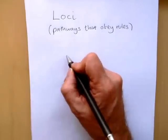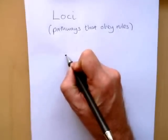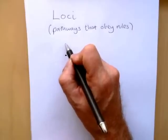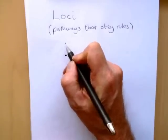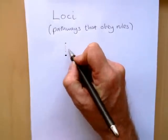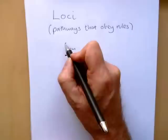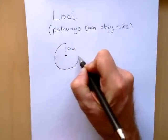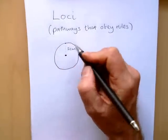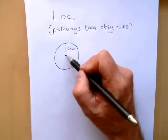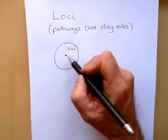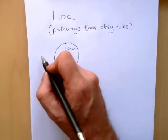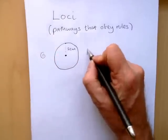The first one is being a fixed distance from a point. Now if you're a fixed distance from a point, let's say you are 2cm away from a point, then the pathway you'll take will be circular. The definition of a circle is that you're always a fixed distance away from the center. Now I've just drawn it freehand for now. I'll be showing you later how to do it with a pair of compasses. So that's your first rule, fixed distance from a point.